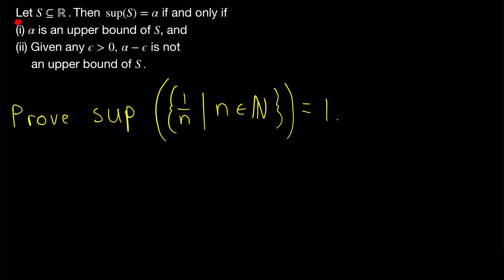First, we want to prove that 1 is an upper bound of our set. How can we do that? Well, certainly, every natural number n is greater than or equal to 1. So we could say n is greater than or equal to 1 for every natural number n. Dividing both sides of this inequality by n yields that 1 is greater than or equal to 1 over n for every natural number n. Thus, we have that 1 is an upper bound of our set. Just like that, we have satisfied the first condition.